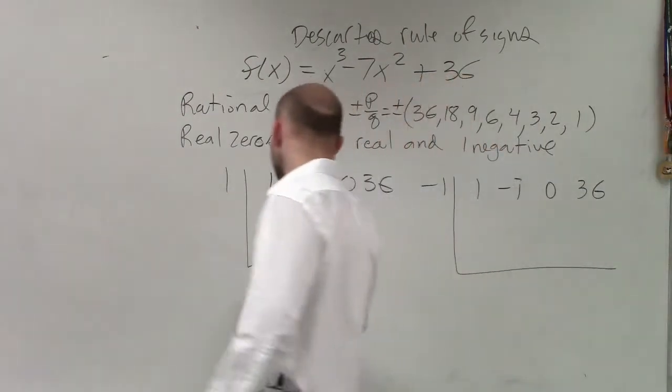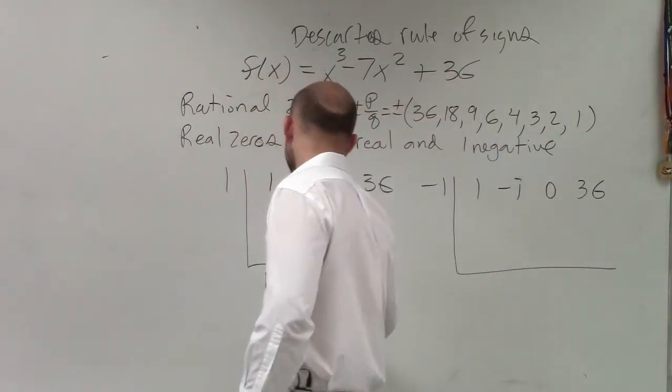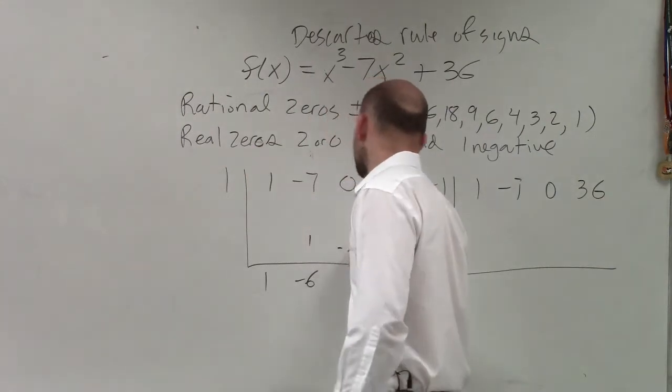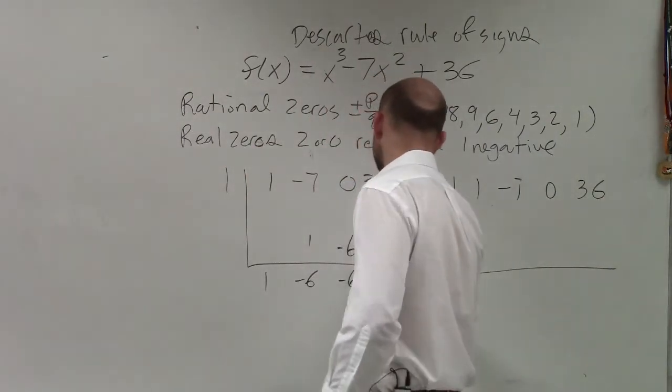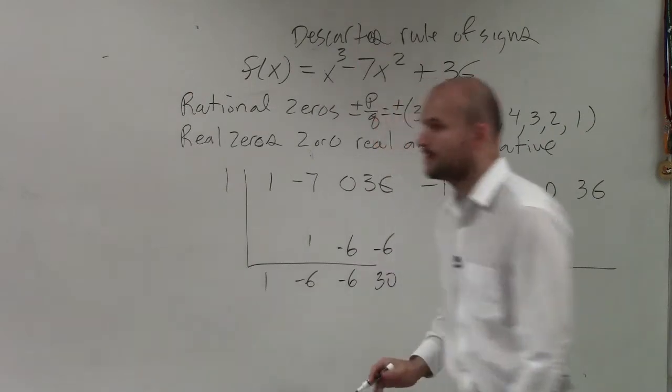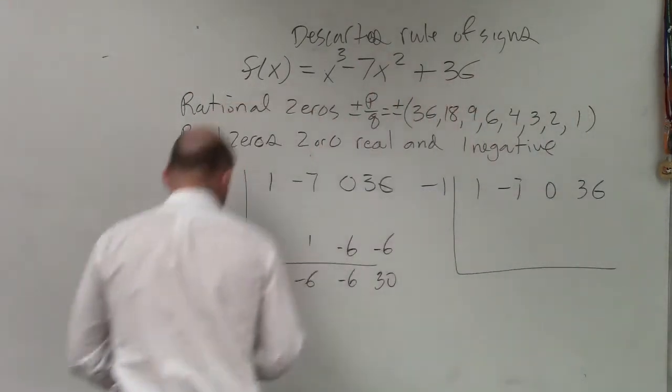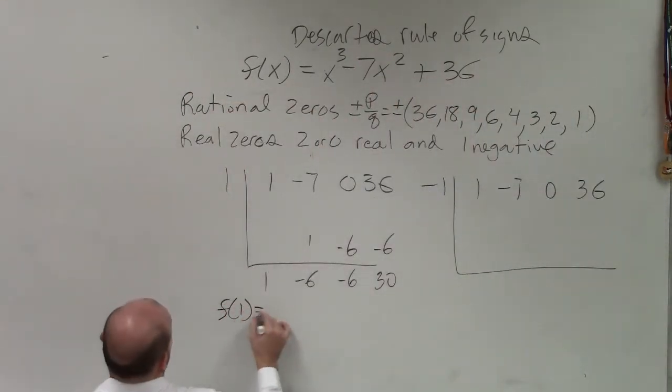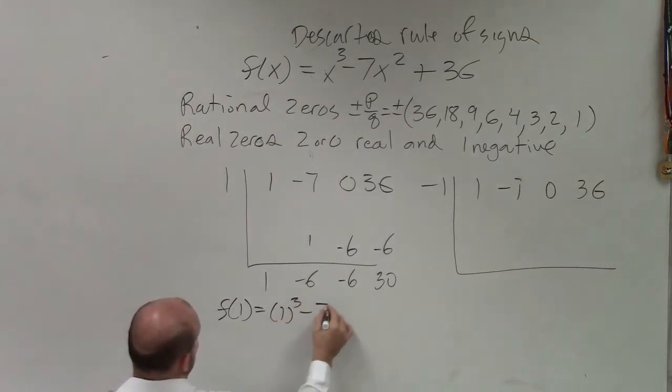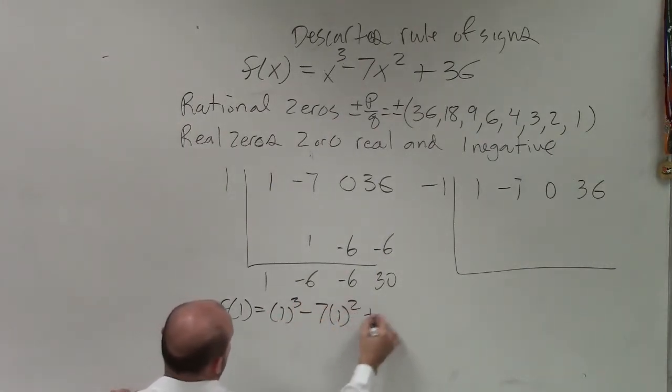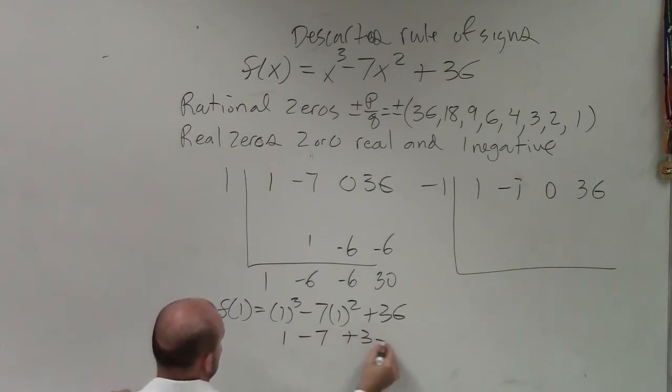So if we apply synthetic division, 1, 1 times 1 is 1, negative 6. Negative 6 times 1 is negative 6, negative 6. Negative 6 times 1 is negative 6, 30. What I'm trying to tell you guys is f of 1 equals 1 cubed minus 7 times 1 squared plus 36, which is 1 minus 7 plus 36. f of 1 equals 30.